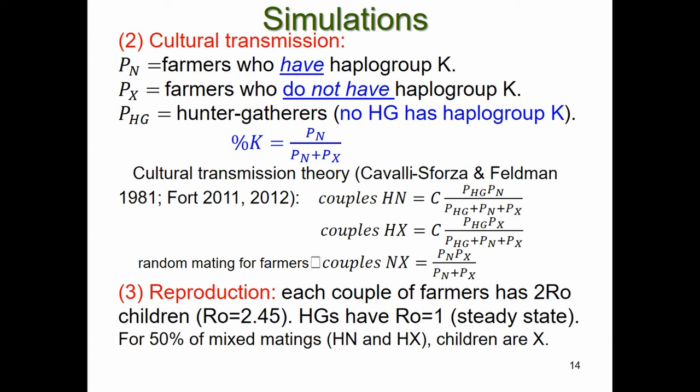The cultural transmission only occurs between hunters and farmers, not between farmers and farmers, so there is no mating bias among farmers. Finally, reproduction: farmer couples produce children with reproduction rate r, and for 50 percent of mixed matings — between hunter-gatherers and farmers — the mitochondrial DNA is transmitted from mother to child.